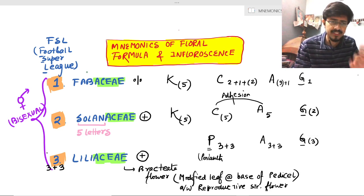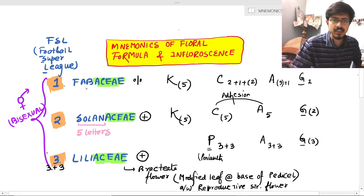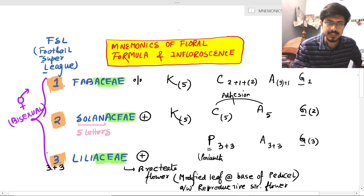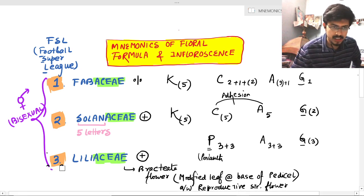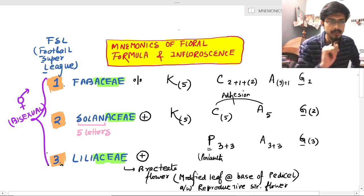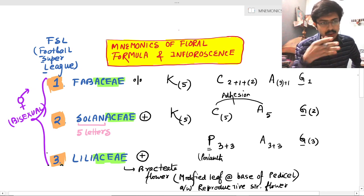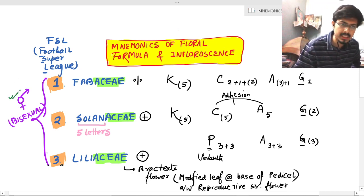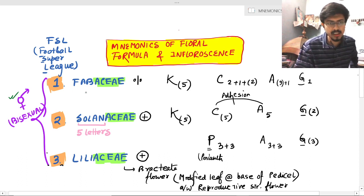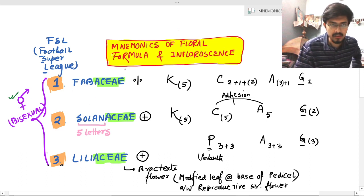There are three types of families of the flowering plants. One is Fabaceae, two is Solanaceae, and three is Liliaceae. You have to remember these three — Fabaceae, Solanaceae, and Liliaceae. All three types of flowers are bisexual, and this sign represents the bisexuality of these three families.